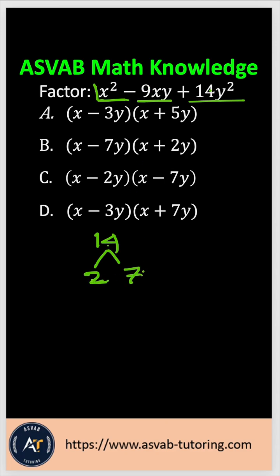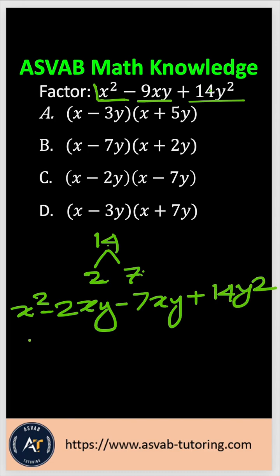Let me rewrite that so that gives you x squared minus 2xy minus 7xy plus 14y squared. So if you take x common here, that gives you x minus 2y. If you take 7y common here, that gives you x minus 2y.